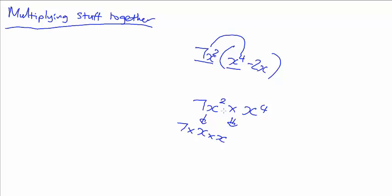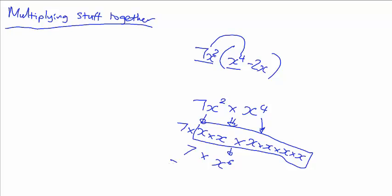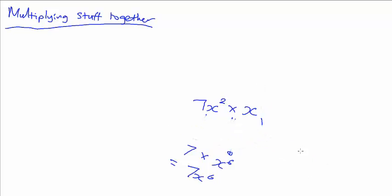And here's what I think is the best way of doing it. Break everything down as much as possible. So, look, 7x squared is 7 times x times x. x to the 4 is x times x times x times x. Now, obviously, we're multiplying this. You've got this. That's 6x's, so that's just going to become x to the 6 times 7. Can't do much without 7x to the 6. That's how you do that one.